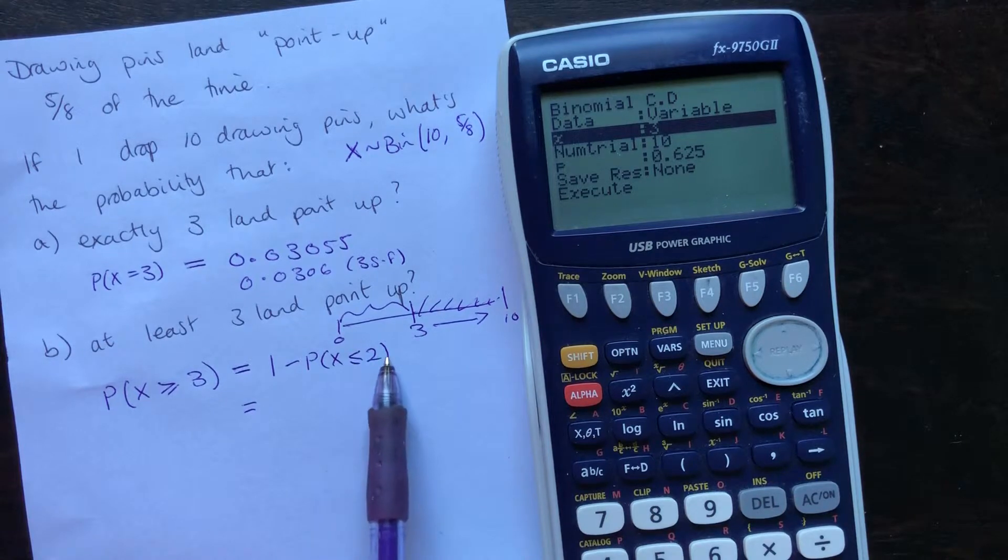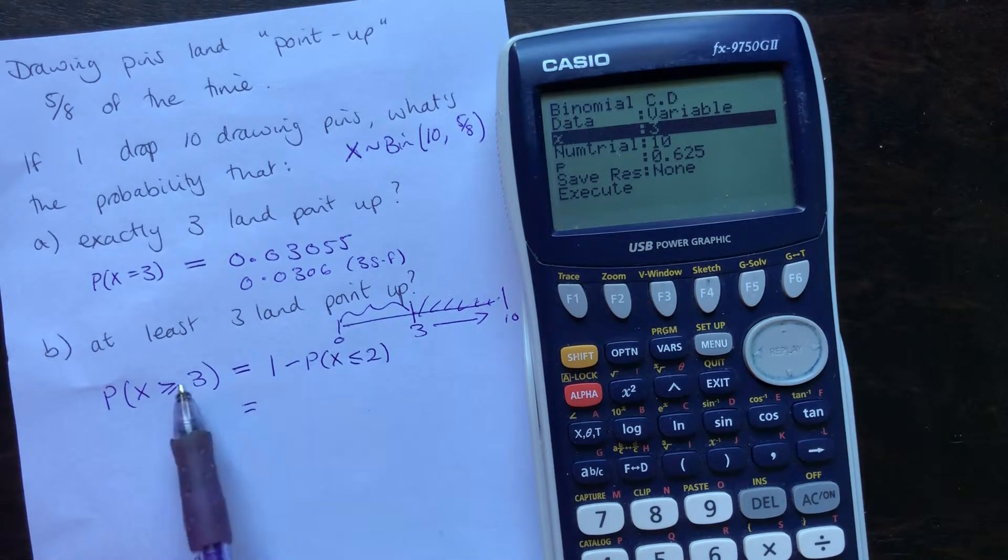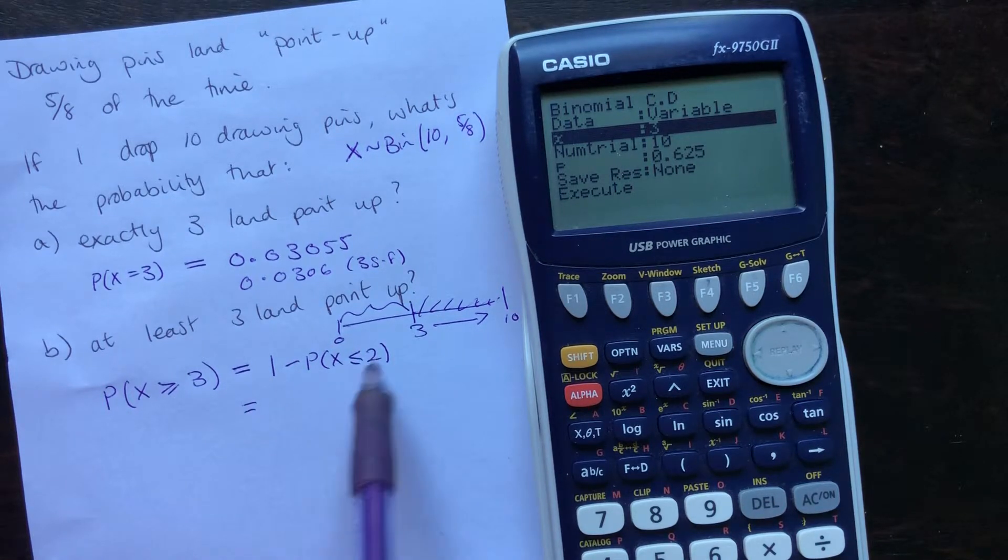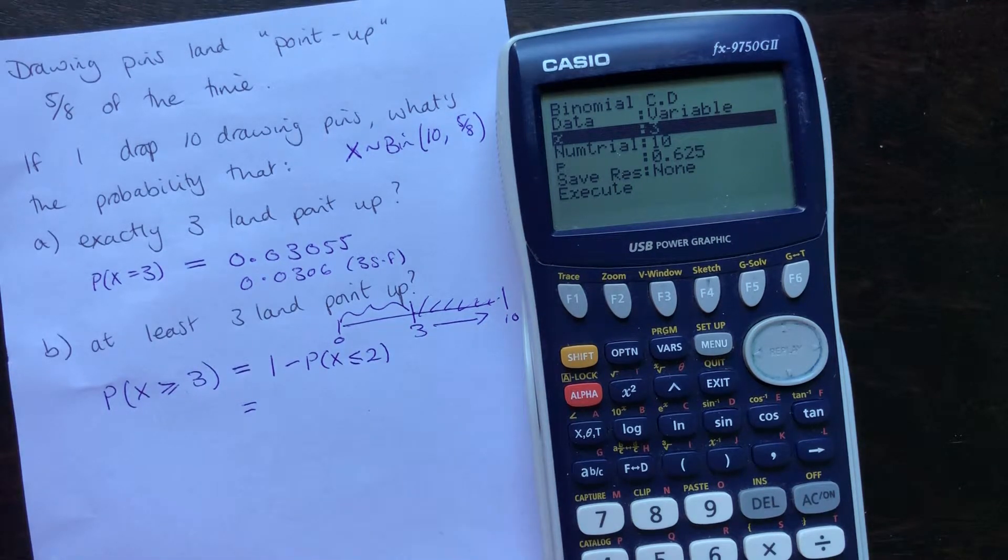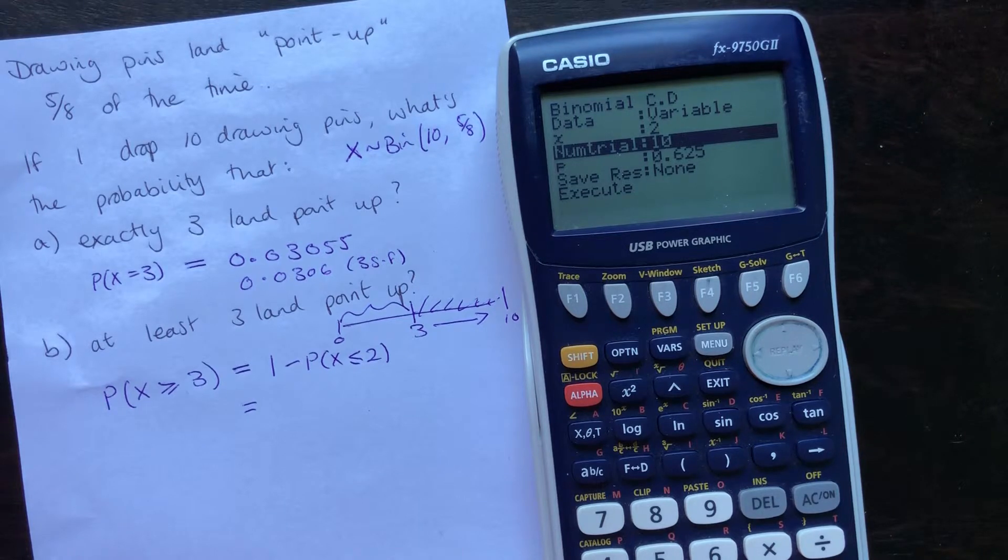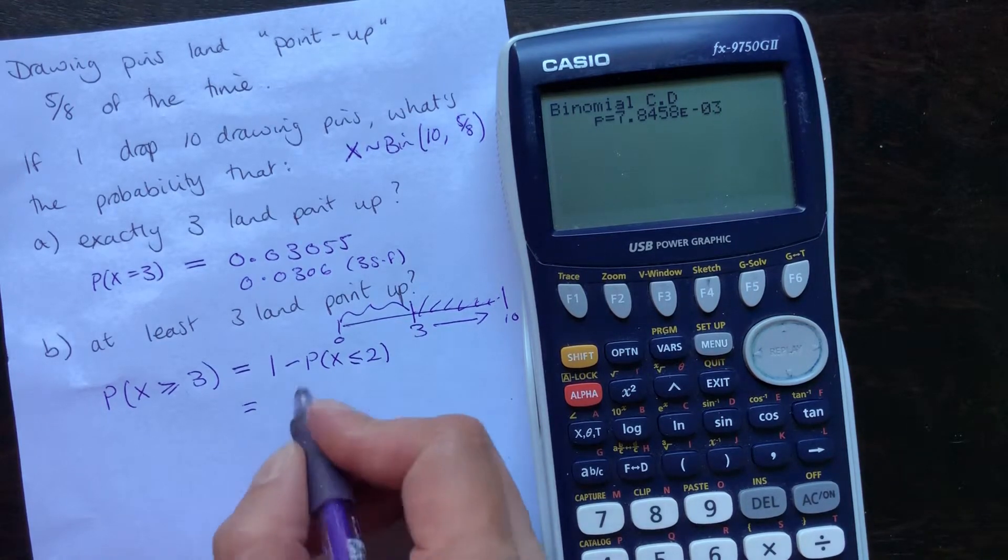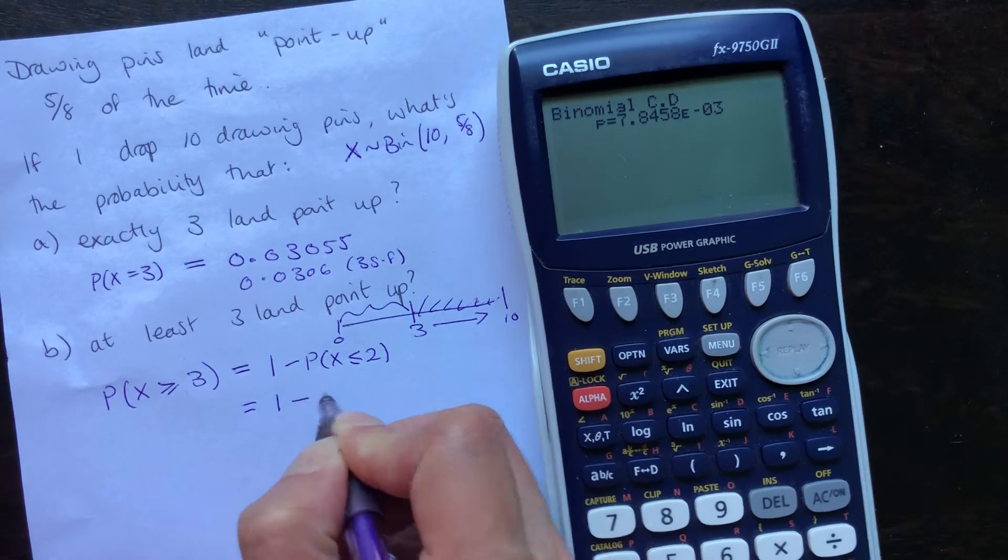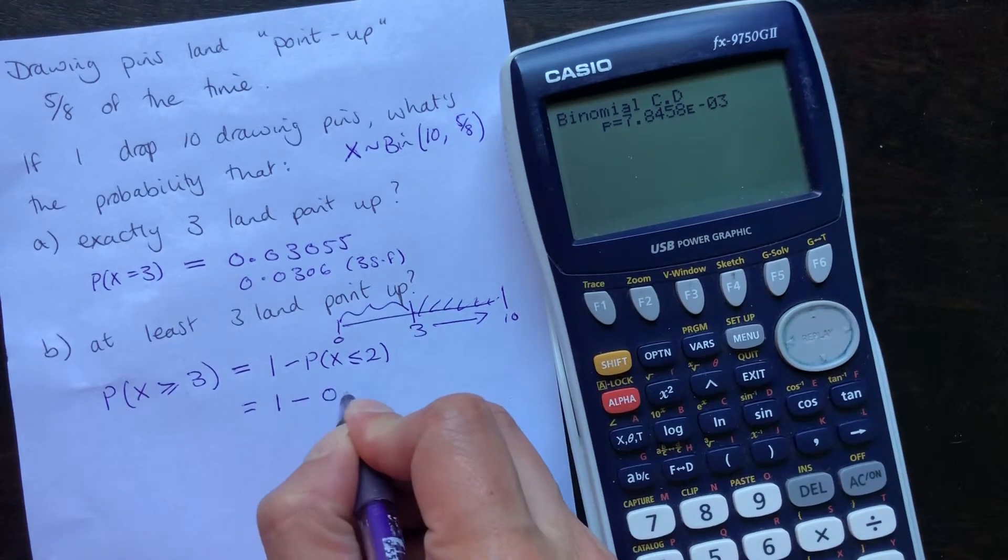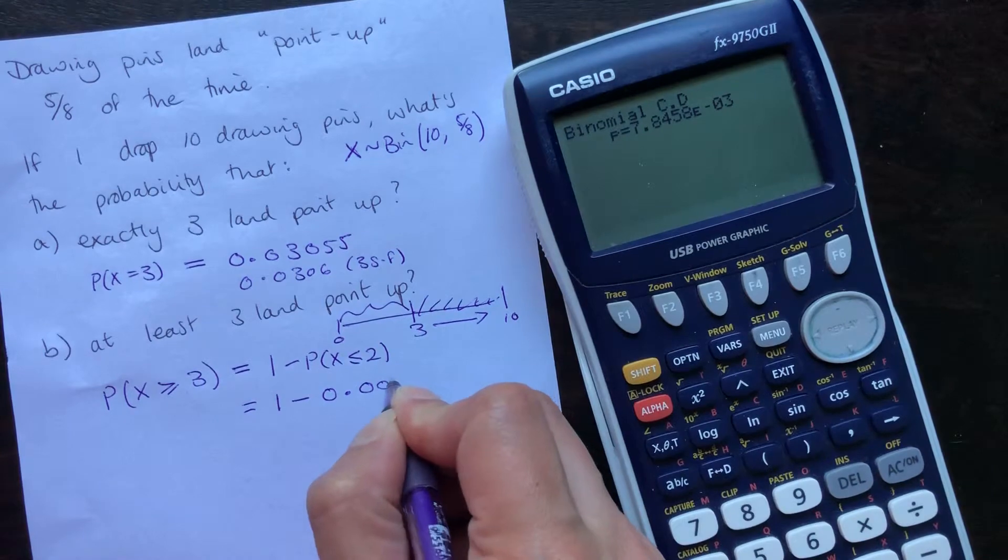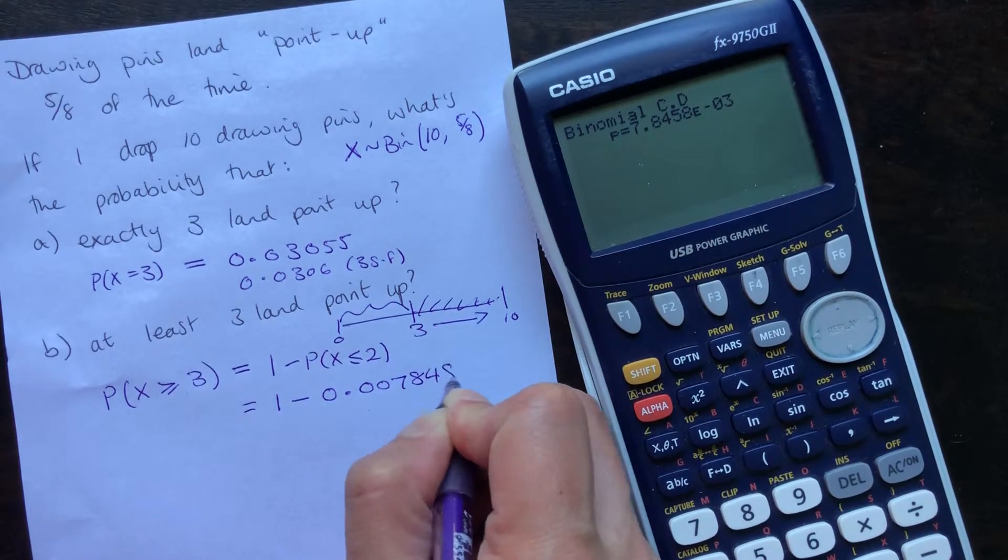X is this number here that we're testing for. It's not the three, otherwise it would get included. We would do an X less than or equal to three. We don't want that because we want the three included on this part here. So, less than or equal to two. So, we put the two in. Number of trials stayed the same at 10, and the probability remained the same. So, this is now one minus that probability that the calculator's just worked out for us.